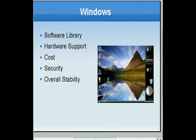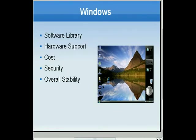Cost is another advantage for Windows PCs. You can buy a Windows PC all the way up and down the price spectrum — from a $3,000 gaming rig from Alienware all the way down to a $299 netbook. So cost is definitely an advantage when it comes to a Windows PC.